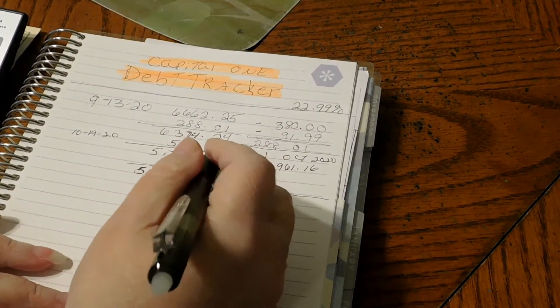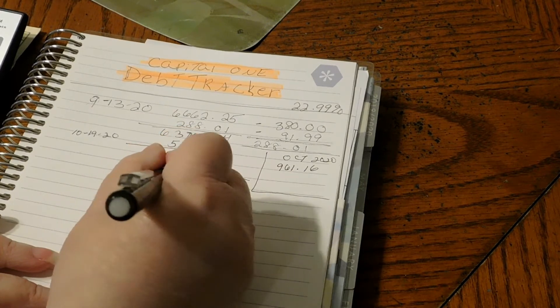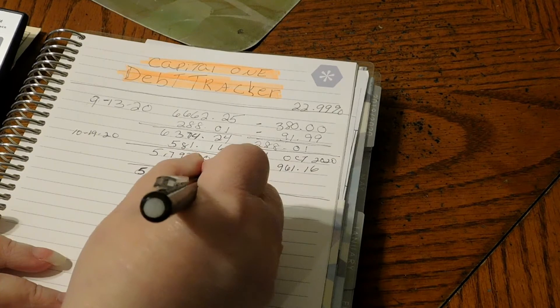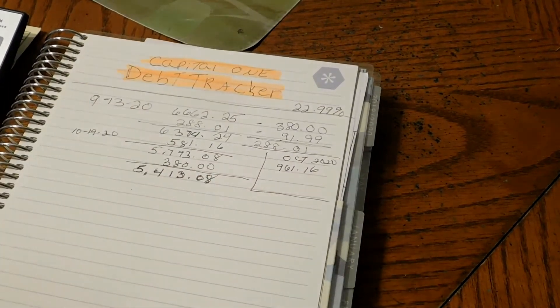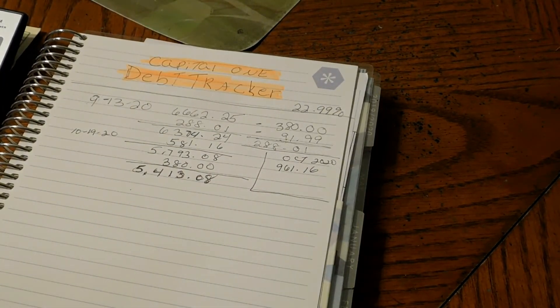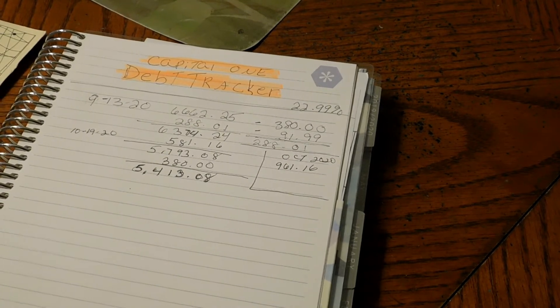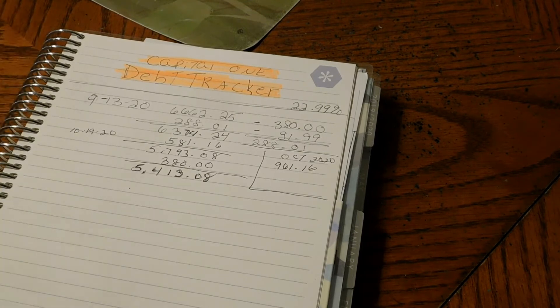We still have a balance of $5,413.08, and I plan on paying that off very shortly. I hope to have it paid off come January 2021. But we have money in our envelope, but we're gonna save that for when we update our savings tracker.